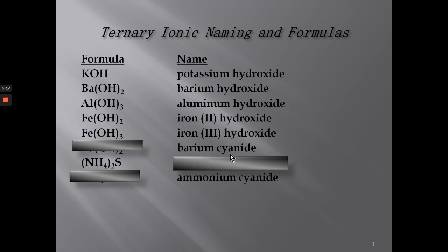Barium cyanide. In order to write this formula, we need to know the oxidation of barium and the oxidation for the polyatomic ion cyanide. Barium is in group two, so that's plus two; cyanide is minus one. So I'm going to need two cyanides for every one barium for them to cancel.